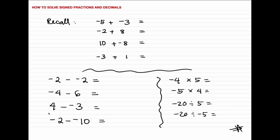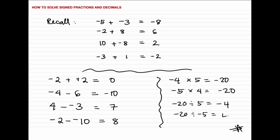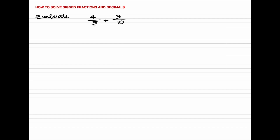Let's check your answers. So here we want to evaluate this expression: 4 over 5 added by 3 tenths. In adding fractions, it is best to make the denominators the same by finding their least common multiple. The LCM of 5 and 10 is 10.